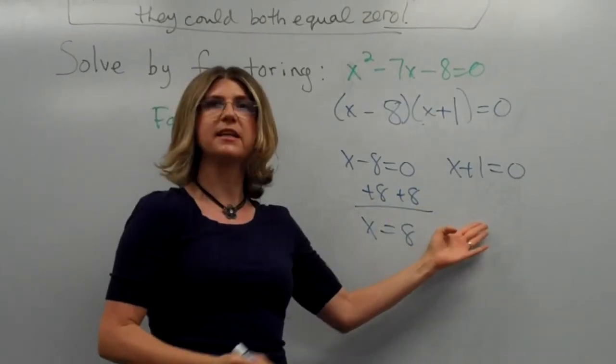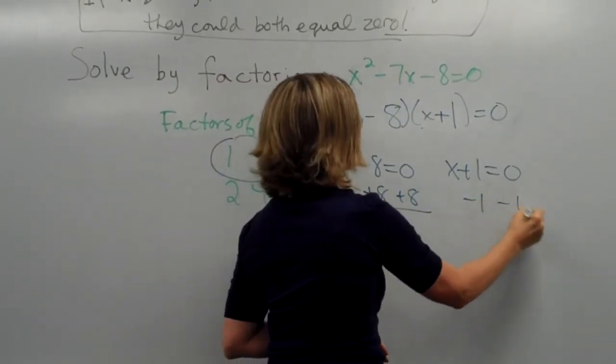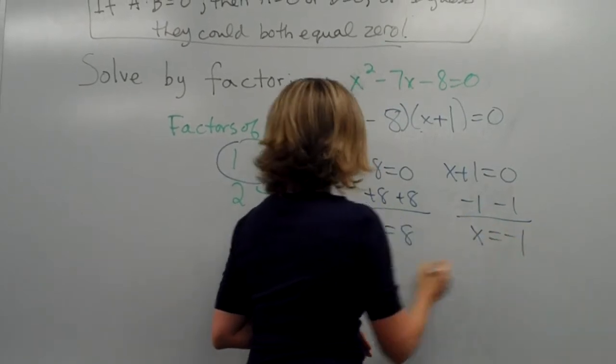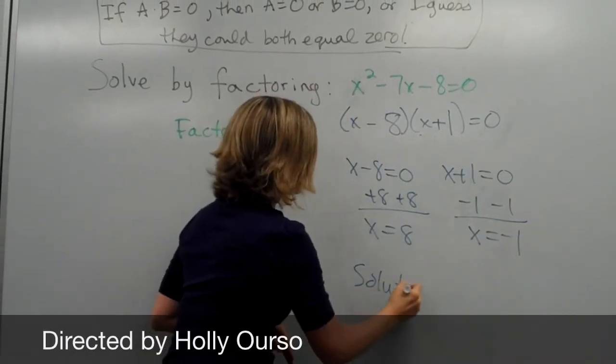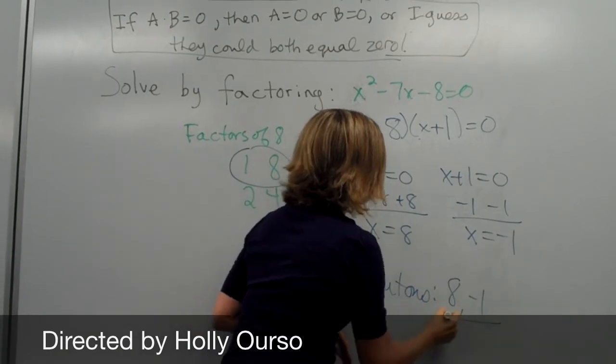And, how do we solve for x here? We subtract one from both sides. So, x is minus one. So, our solutions are eight and minus one.